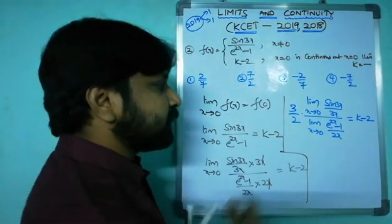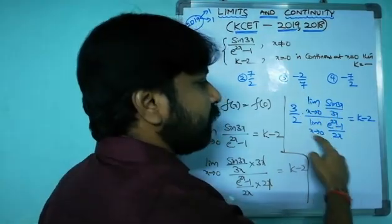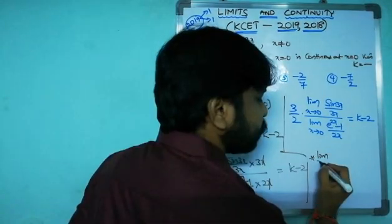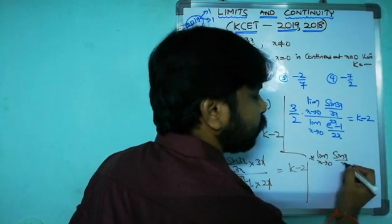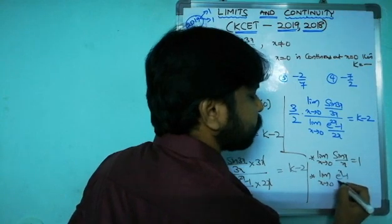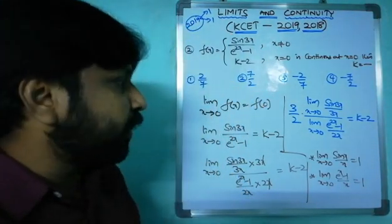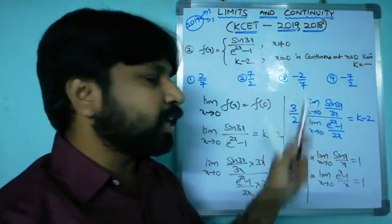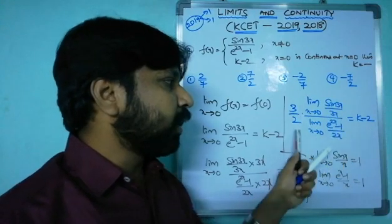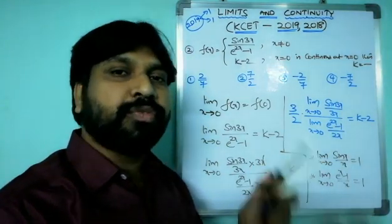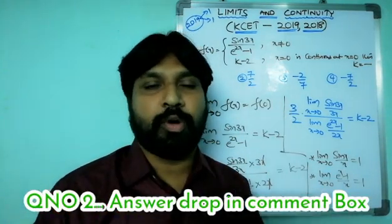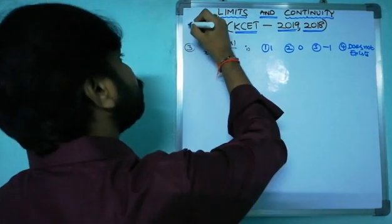Using standard limits: limit x→0 sin(x)/x = 1 and limit x→0 (e^x - 1)/x = 1. So both limits equal 1, giving 3/2 × (1/1) = k - 2, which means k - 2 = 3/2. Simplify to find k, and drop your answer in the comment box.